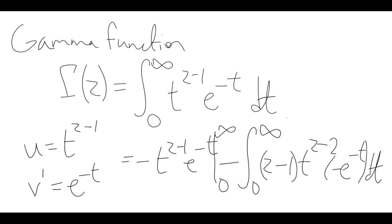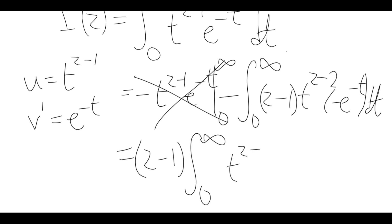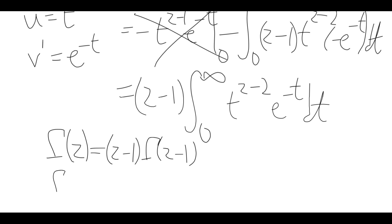As long as z is bigger than 1, the t to the z minus 1 term will be 0 at t equals 0, and the e to the minus t will make it equal to 0 as we go off to infinity, so that part goes away entirely. We end up with z minus 1 times the integral from 0 to infinity of t to the z minus 2, e to the minus t, and that's exactly gamma of z minus 1. So we get gamma of z equals z minus 1 times gamma of z minus 1, or to make it look nicer, gamma of z plus 1 equals z times gamma of z.